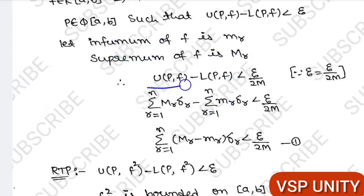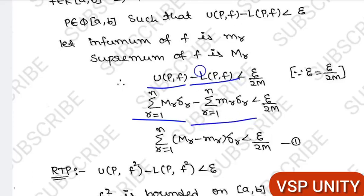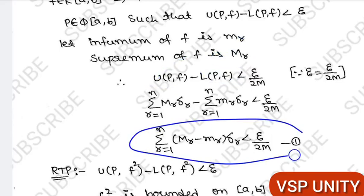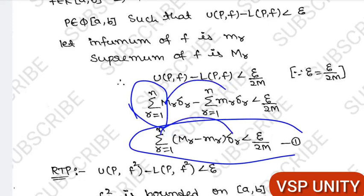U(P, f) is the sum from r=1 to n of M_r · Δr, and L(P, f) is the sum from r=1 to n of m_r · Δr. Taking Δr outside as common, we get the sum from r=1 to n of (M_r − m_r) · Δr.